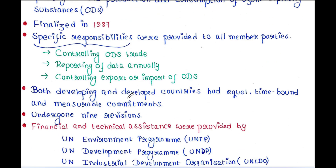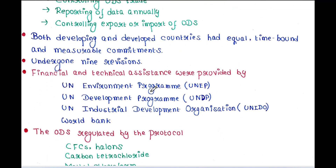Both developing and developed countries had equal time-bound and measurable commitments toward the protocol. They have undergone nine revisions. Financial and technical assistance were provided by the UN Environment Programme, UNEP,